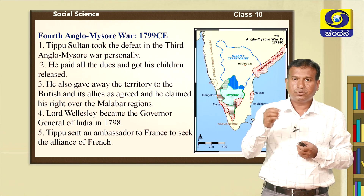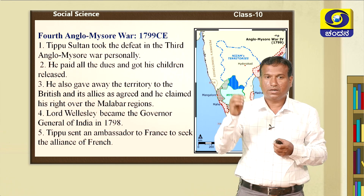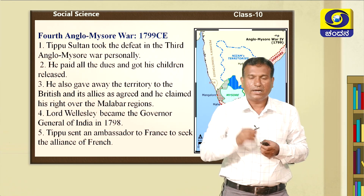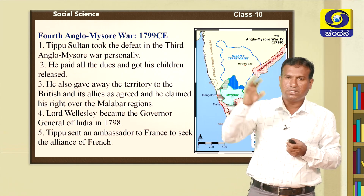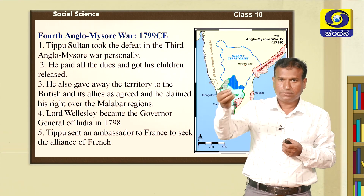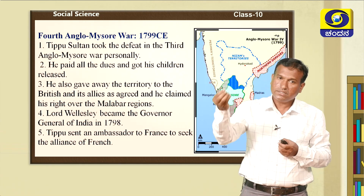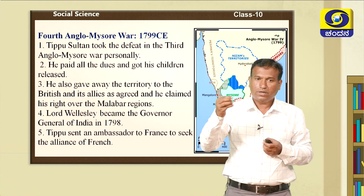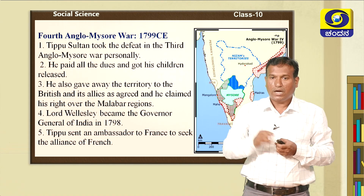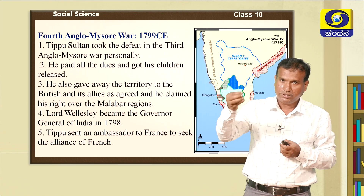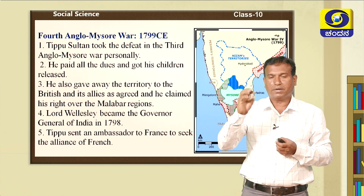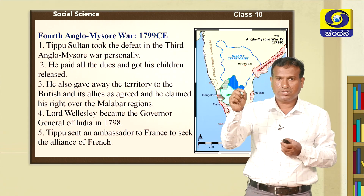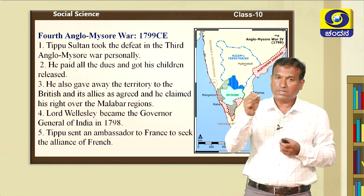Tipu Sultan took the defeat in the Third Anglo-Mysore War personally. He paid all the war indemnity to the English, got his children released, and gave away the territory according to the agreement. After giving all the territory to the English, he wanted to reclaim his rights over the Malabar region, but the English refused to give back his rights.